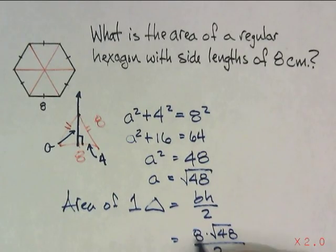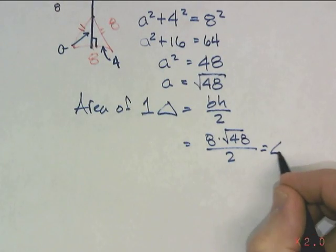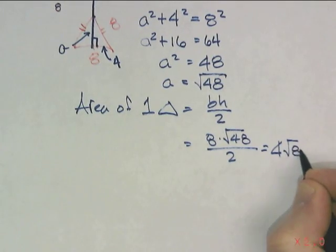And divide it by 2. I can simplify that. That would be 4 root 48.